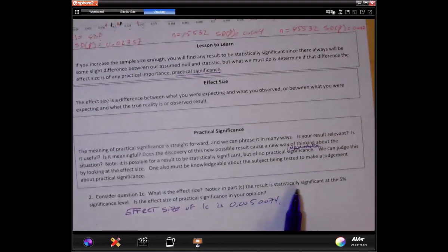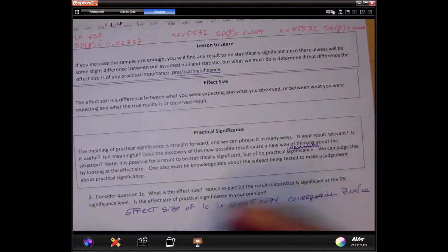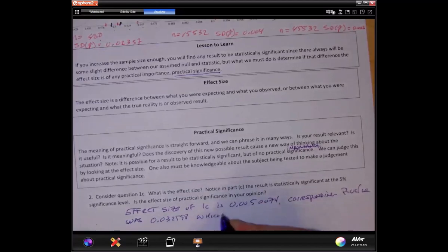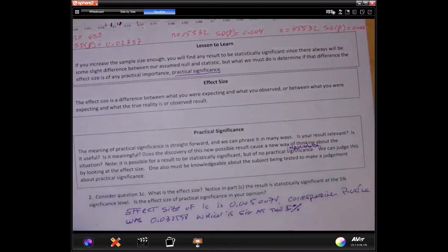And notice the part C, the result is statistically significant at the 5% level. Yes, it was, because the p-value, corresponding p-value, was 0.032598, which is significant at the 5% level, which is what we were using to judge. I think we were starting with the 5%. It should have been 5% all along, which is about the 5% level.